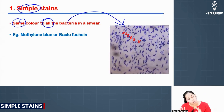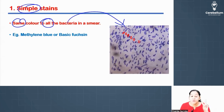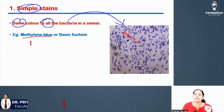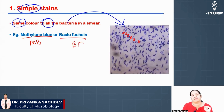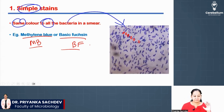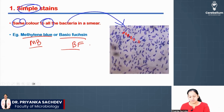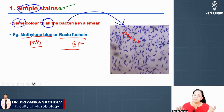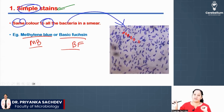Learn two examples of simple stain: methylene blue and basic fuchsin. These are the two examples. See the image on this page. From this page, three MCQs can come. The first question you can get is: what is simple stain? You can get four options. Simple stain is a stain which gives same color to all bacteria.